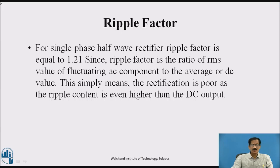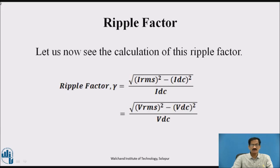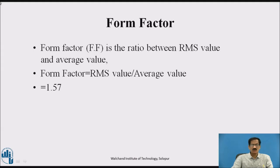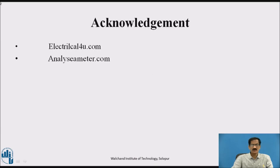Ripple factor equals 1.21, which is the ratio of RMS value of fluctuating AC components to the average or DC value. Form factor is the ratio of RMS value upon average value, which comes out to be 1.57.